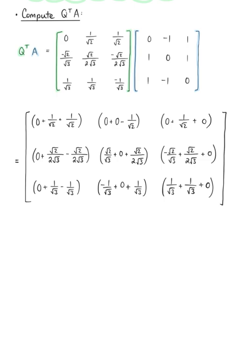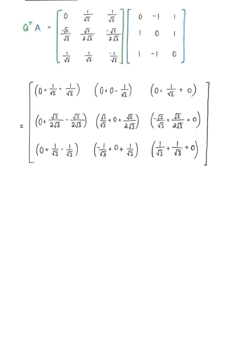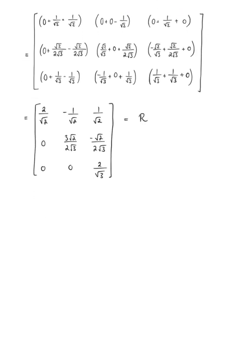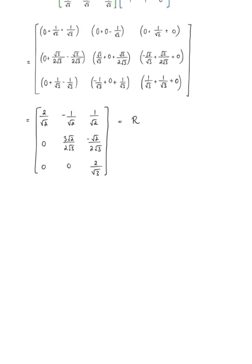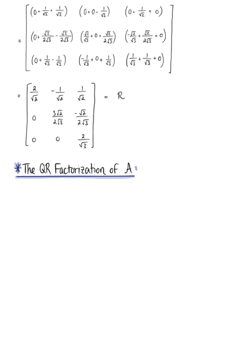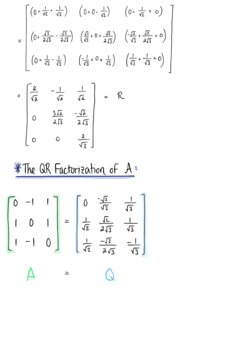Combining all like terms, we are left with our 3-by-3 matrix R. We can now state that the given 3-by-3 matrix A equals the 3-by-3 matrix Q, whose columns are orthonormal, multiplied by the 3-by-3 invertible upper triangular matrix R. This is our final answer.